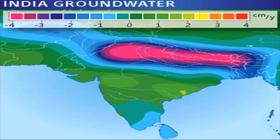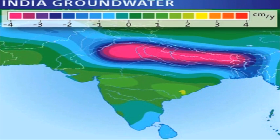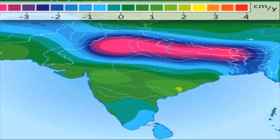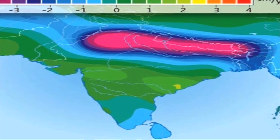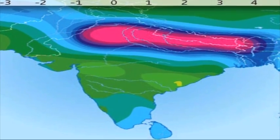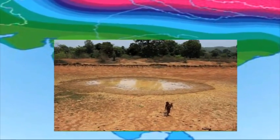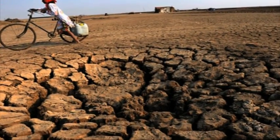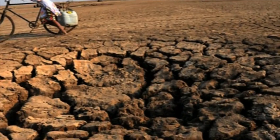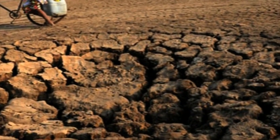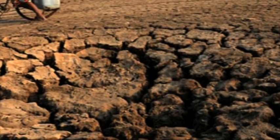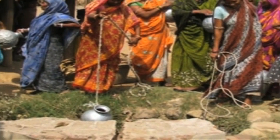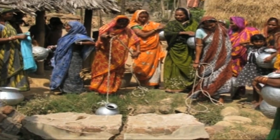Groundwater is the source for more than 85% of India's rural domestic water requirements. In certain high demand areas, groundwater development has already reached a critical stage resulting in acute scarcity of the resource.